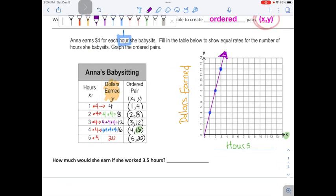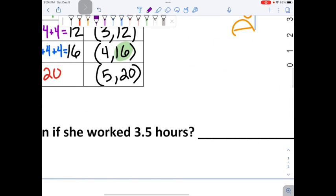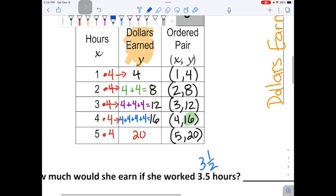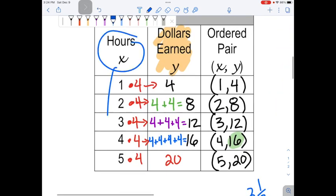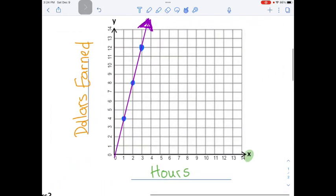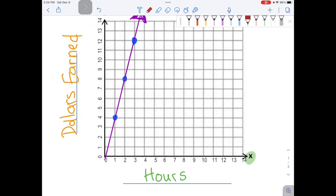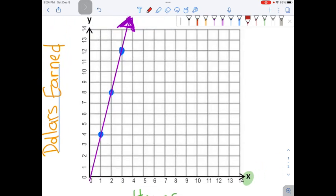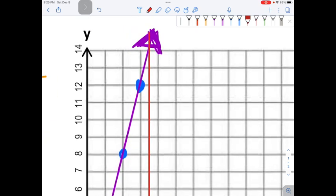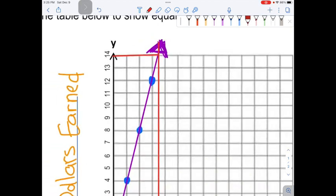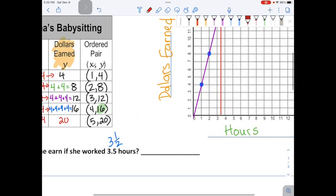One more thing. We need to answer the question at the bottom. How much would she earn if she worked 3.5 hours? Remember, 3.5 is 3 and 5 tenths, which is the same as 3 and a half. If I look in this table, our hours are at the beginning, it does not say 3.5. So I'm going to go to the graph and find 3.5. 3.5 means 3 and a half, so I will make a line starting at 3 and a half. So that's halfway between 3 and 4. And make it go straight up. Looks to me like that is going to connect straight across to 14. So using this graph, I can see that if she worked 3 and a half hours, she would make $14.